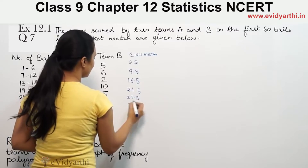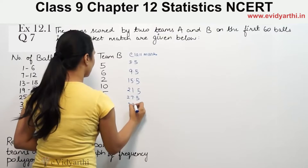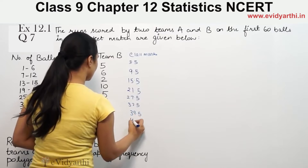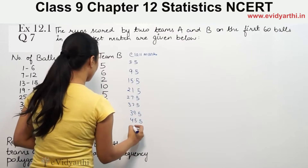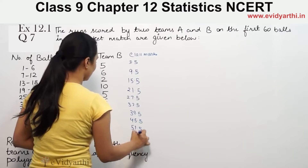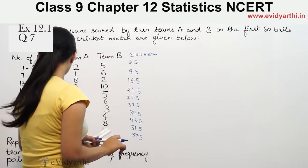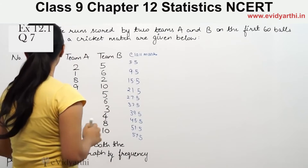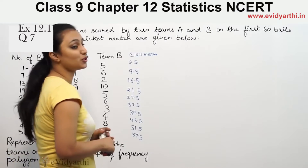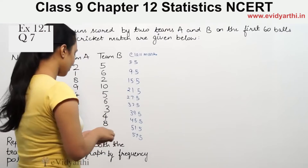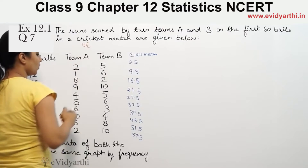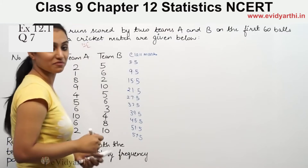Continuing the class marks: 31 plus 36 gives 67, divided by 2 is 33.5. Then 37 plus 42 is 79, divided by 2 is 39.5. Then 43 plus 48 is 91, divided by 2 is 45.5. And 55 plus 60 is 115, and 115 divided by 2 is 57.5.